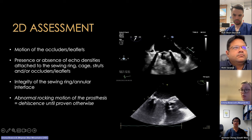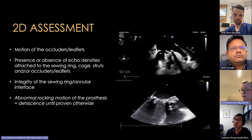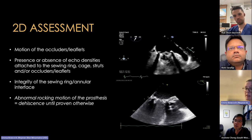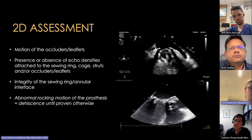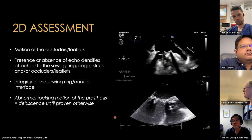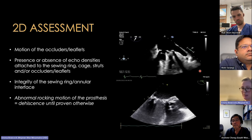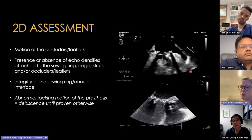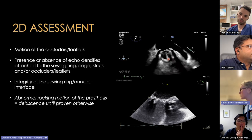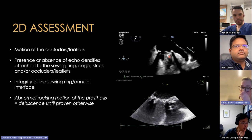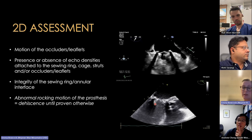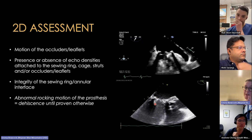On 2D assessment, look at the motion of occluders (mechanical) or leaflets (bioprosthetic). A real case from a patient who couldn't be anticoagulated shows a bileaflet mechanical valve where one occluder is completely stuck — not moving at all. Look for symmetric motion and expect the usual artifacts. Also look for any echo densities or masses on the valve.